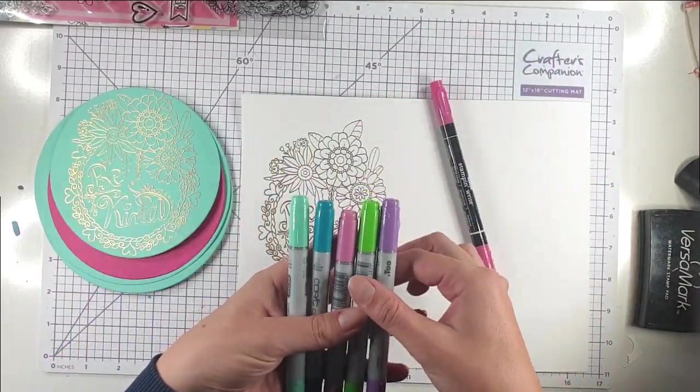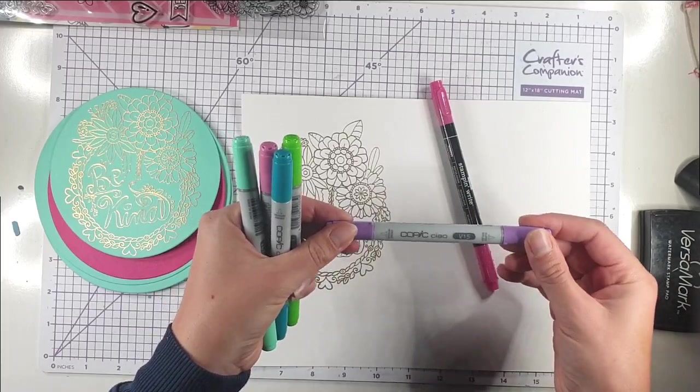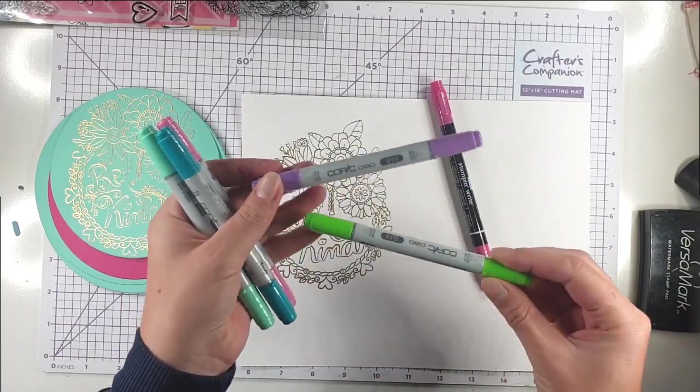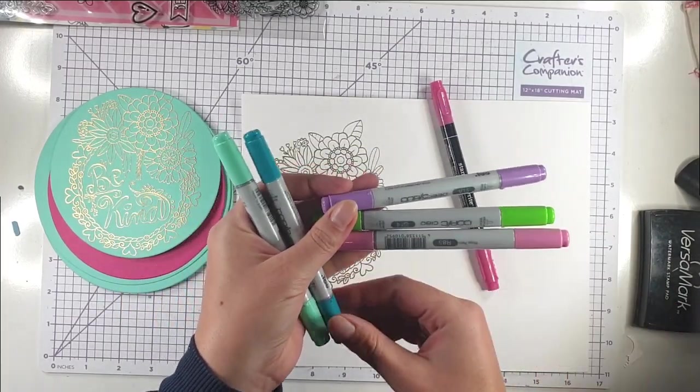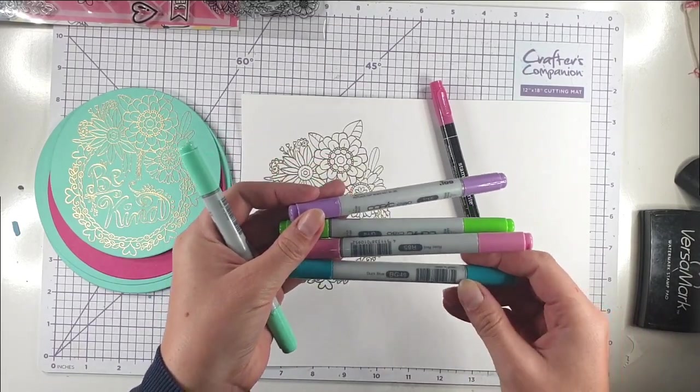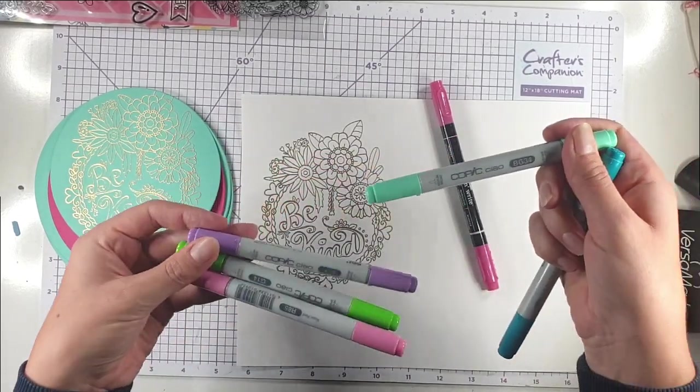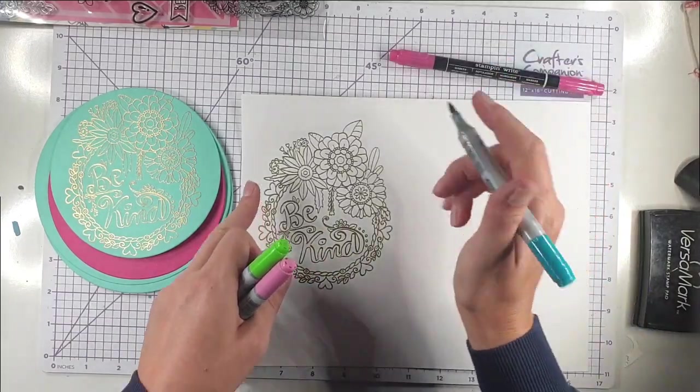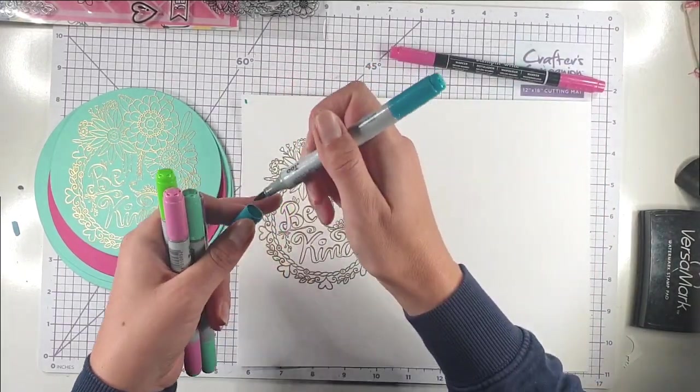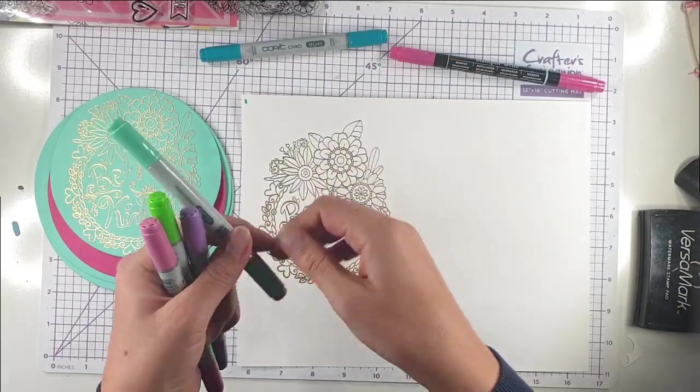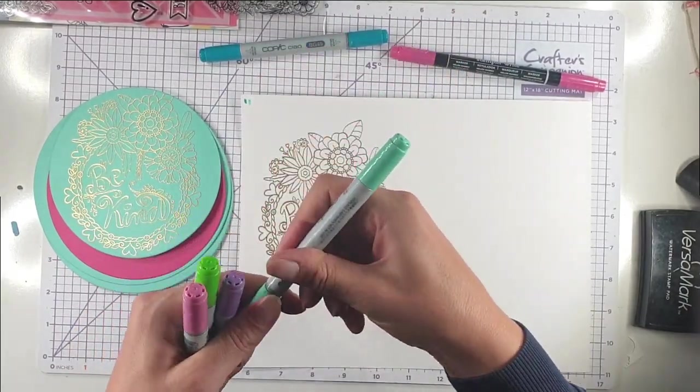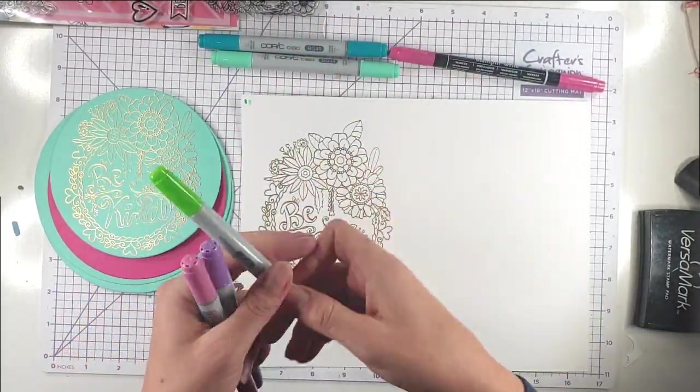I'm also going to use these Copic Ciao markers - I've got V15, G14, R85, BG49, and BG34. I'm going to create a little color palette up here because I'm going to cut it out, just for reference so I can see what colors I'm using as I'm working.